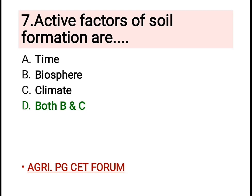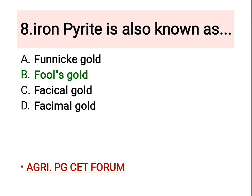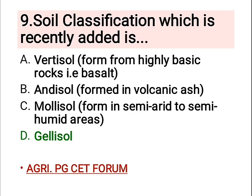Seventh question: the active factors of soil formation — the right answer is both B, biosphere, and climate. Eighth question: iron pyrite is also known as — and the right answer is B, fool's gold. Iron pyrite has the chemical formula FeS₂; it is a sulfide mineral with metallic luster.